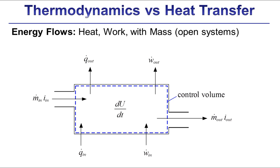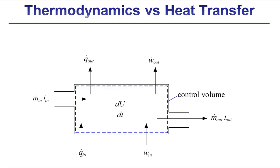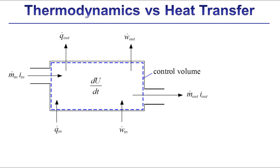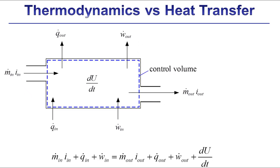Finally, the quantity U is the total internal energy contained in the control volume, so dU/dt is its time derivative — the rate of energy storage. Neglecting kinetic and potential energy, our energy balance enforces that all inflows must equal all outflows plus storage. Thermodynamics by itself didn't give us any way to compute the rates of heat transfer based on the physical situation, and that is the goal of heat transfer. The heat transfer class provides engineering tools to compute Q_dot based on different physical situations.